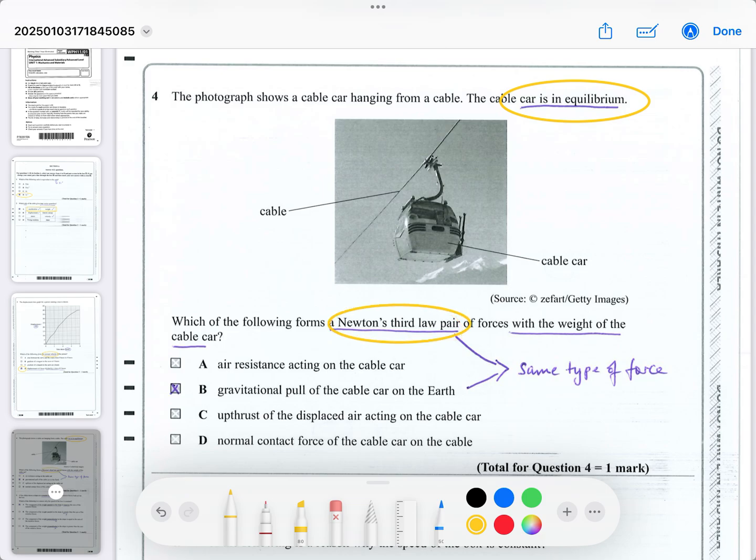So you want to look for the pair that is a Newton's Third Law pair to go with the weight of the cable car. So it must be the same type of force for Newton's Third Law. And the only one that is the same type of force will be gravitational, because weight is gravitational. So it's not about Newton's First Law. Newton's First Law is when any two types of forces on one object are balanced. So you could say some of the others could be to do with Newton's First Law. But for the Newton's Third Law, it must be the same type of force and it's acting on two different objects. So the weight of the cable car is being pulled down by the Earth. And likewise, the gravitational pull of the cable car on the Earth is the paired force with the weight of the cable car. That's Newton's Third Law.